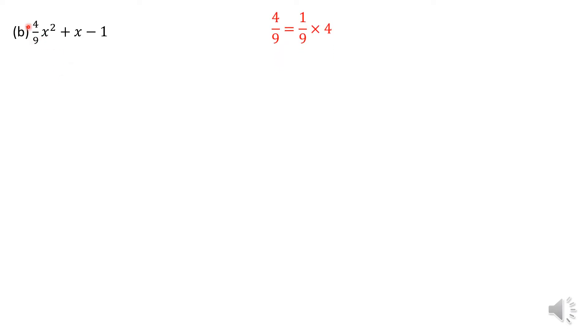So let's look at this 4 over 9 x squared plus x minus 1 quadratic trinomial. What most people don't realize is that the number 4 upon 9 is nothing but 1 upon 9 times 4 upon 9. So you can actually split that fraction. The reason why I am doing that is because I want to take out 1 over 9 or 1 upon 9 as a common factor.